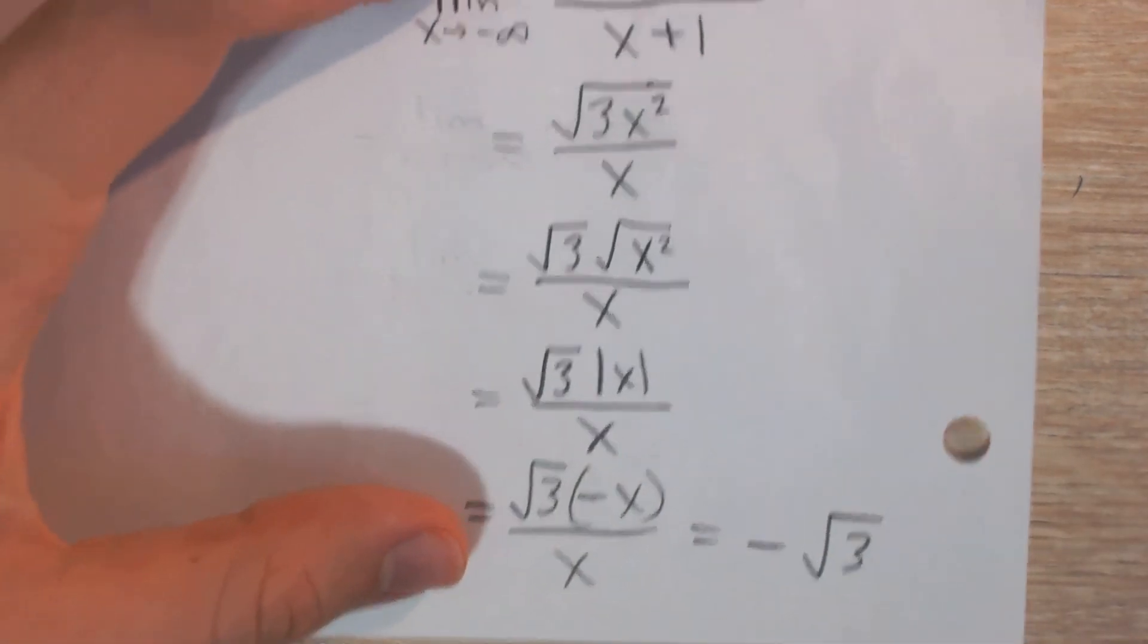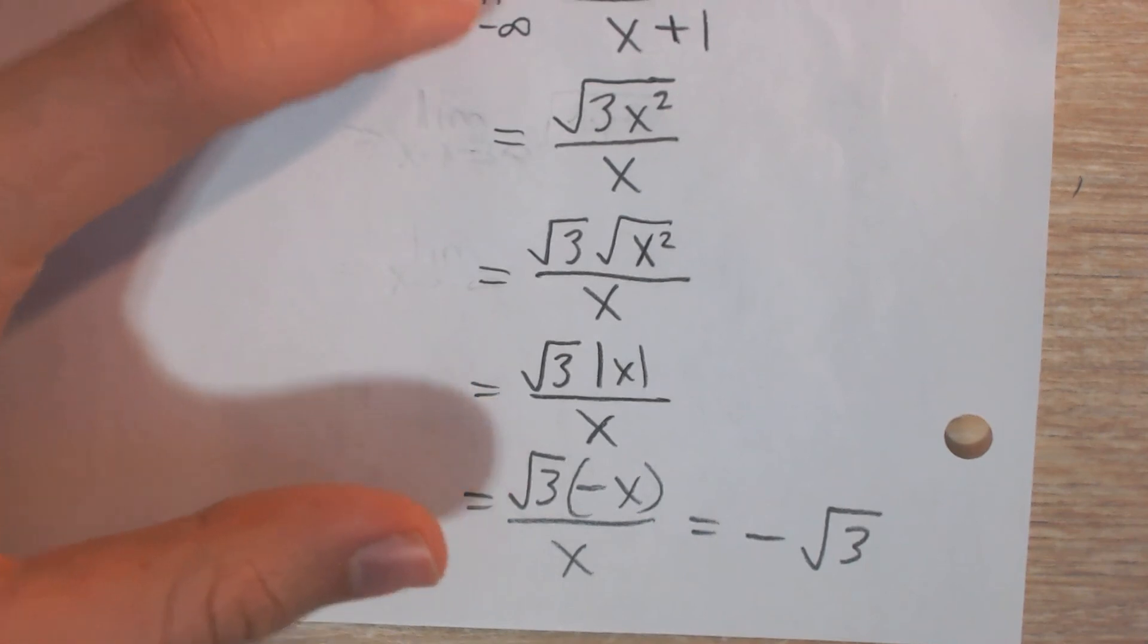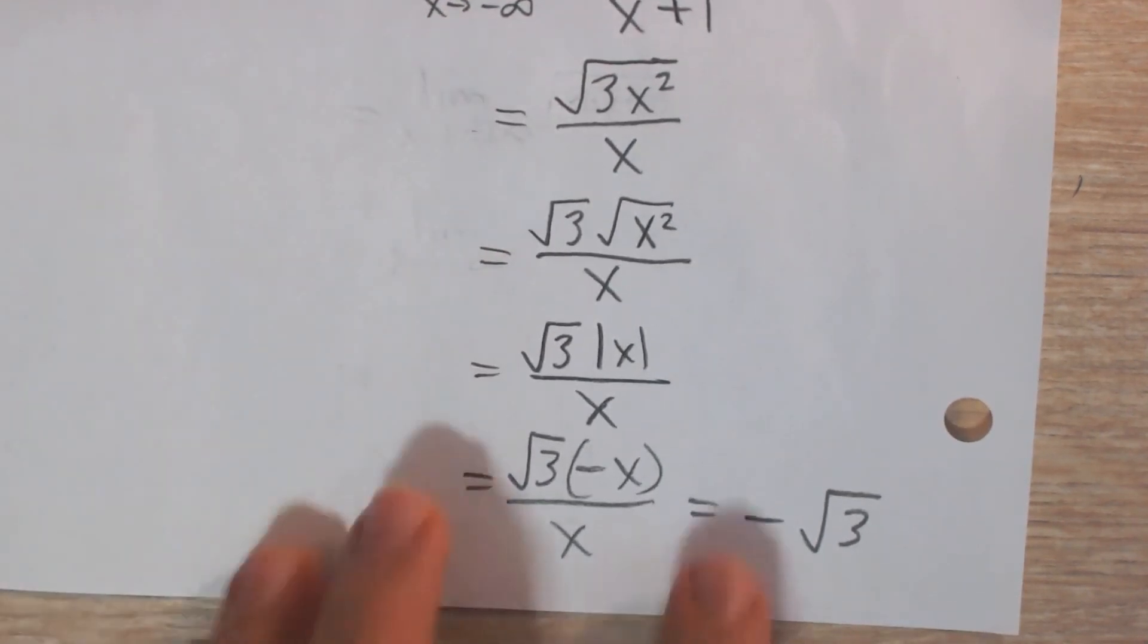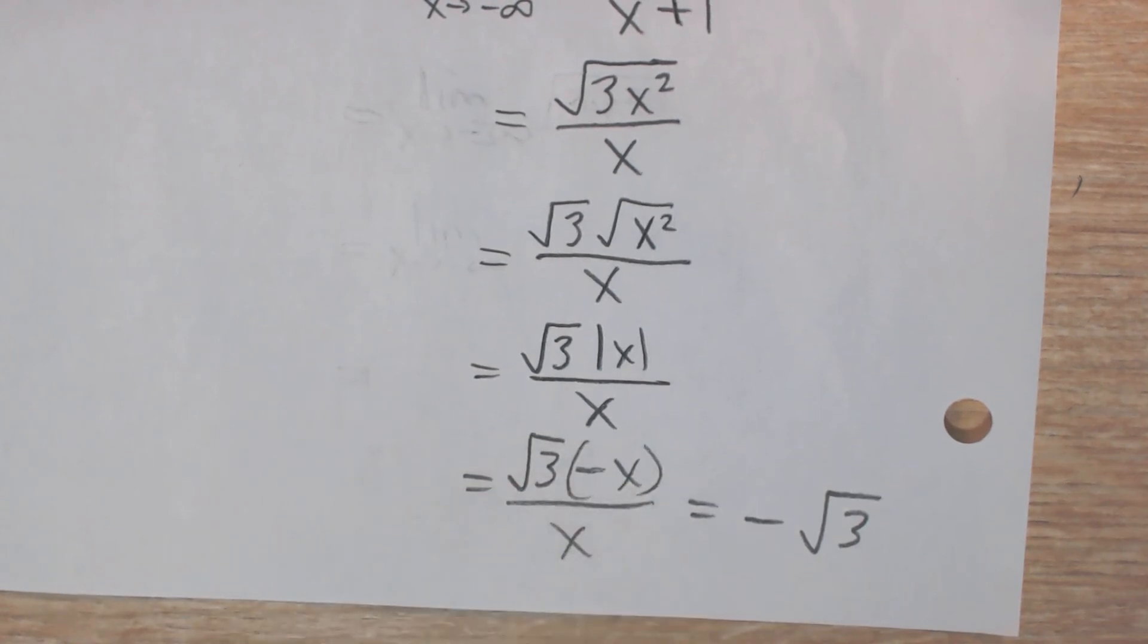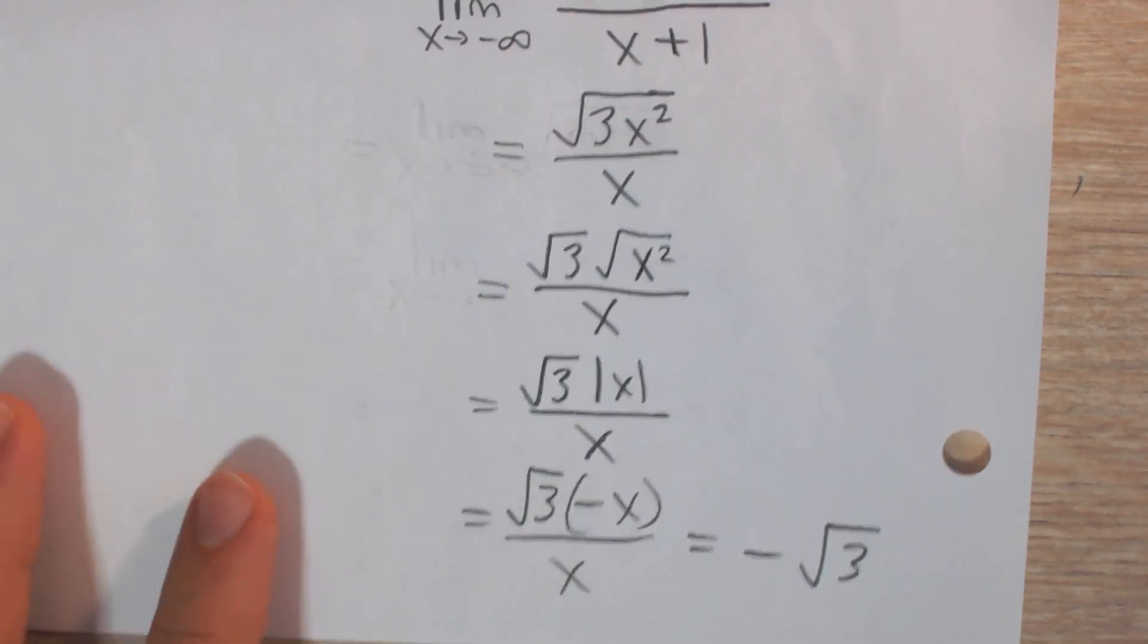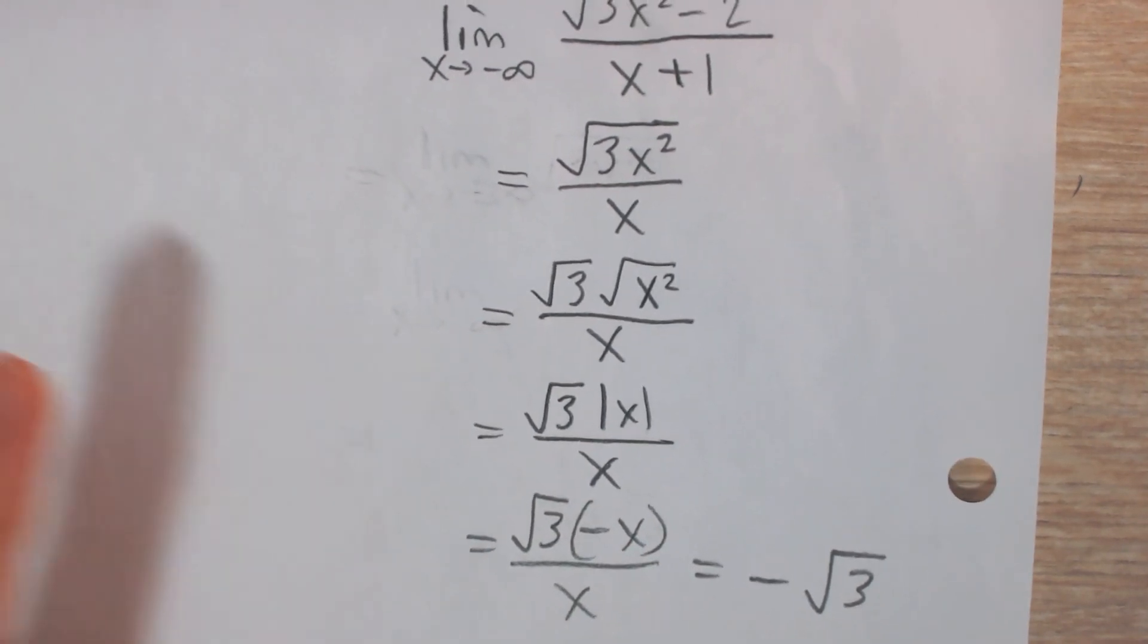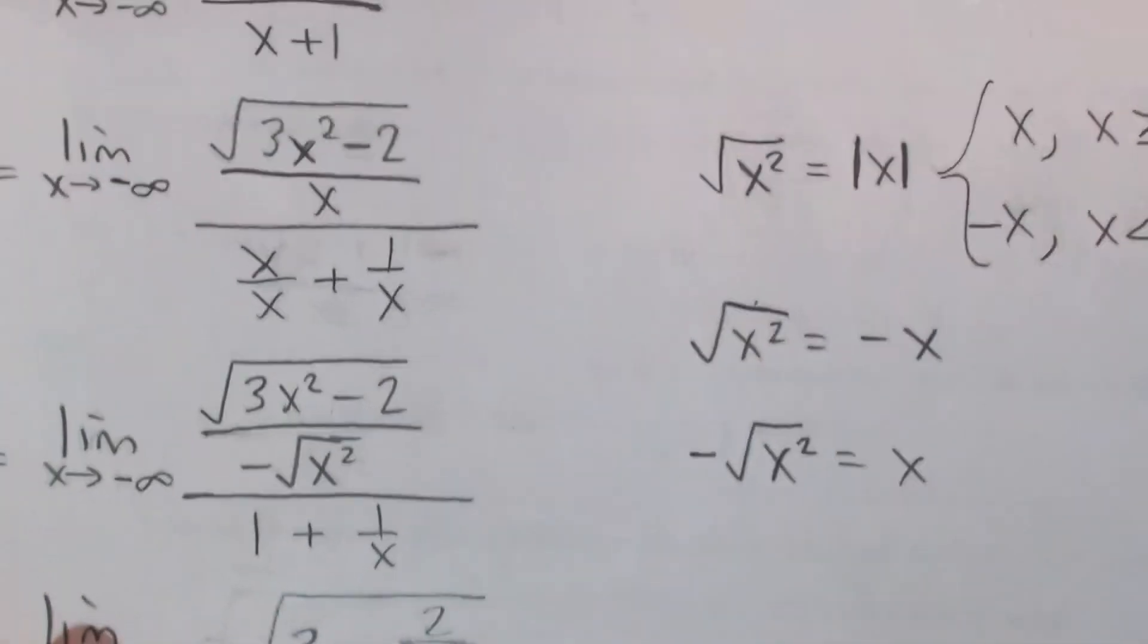This is not, again, this is not a rigorous algebraic technique, but this is kind of a sort of intuition behind it. The x's will sort of cancel, quote unquote, and you'll be left with negative times the square root of 3. So that's kind of just a shortcut method if you want to avoid all the algebra and maybe you don't need to show the rigorous steps.